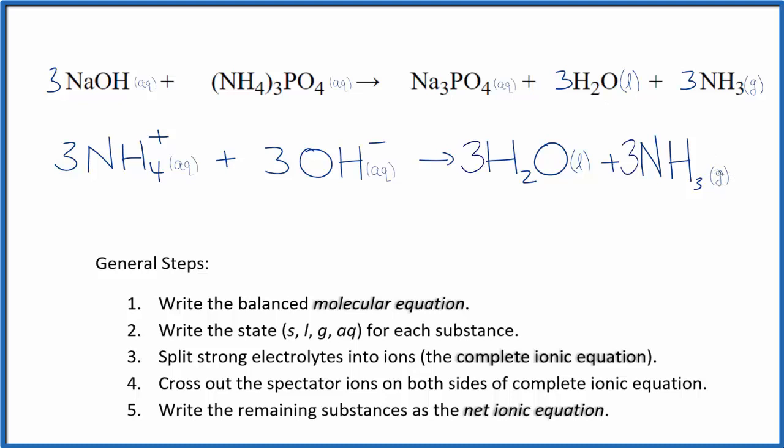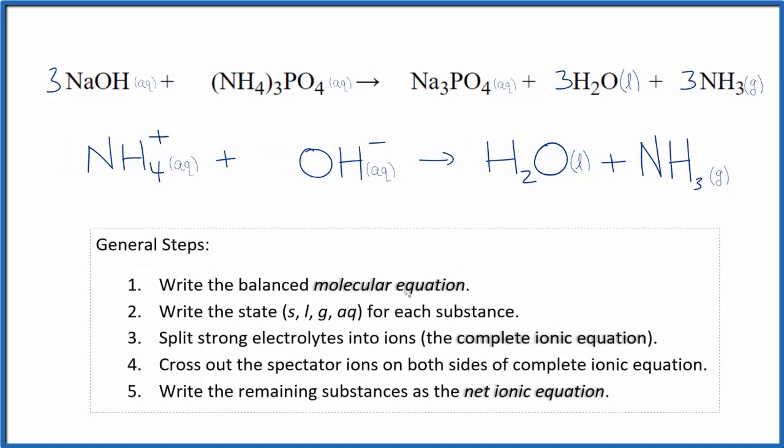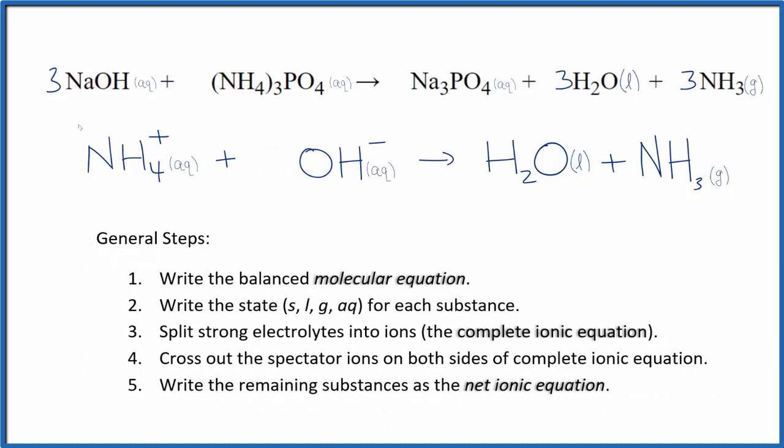If you count the atoms up, they're balanced as well. Since we have a coefficient of three in front of each one of these, we could reduce this down to one - and we don't write the one. This is Dr. B with the balanced net ionic equation for NaOH plus (NH4)3PO4. Thanks for watching.